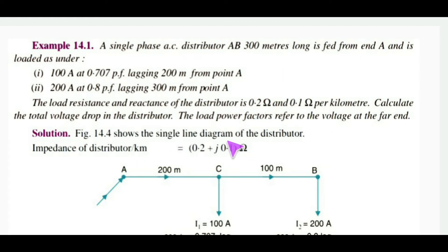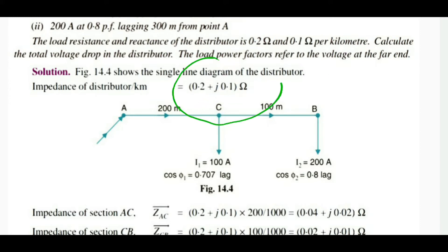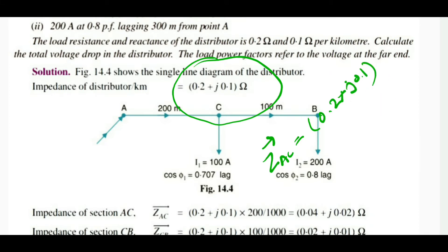Calculate the voltage drop in the distributor. Load power factors refer to the voltage at the far end. First, find the impedance of the distributor per kilometer: impedance per km = 0.2 + j0.1. For section AC (200 meters): impedance = (0.2 + j0.1) × 200 divided by 1000.